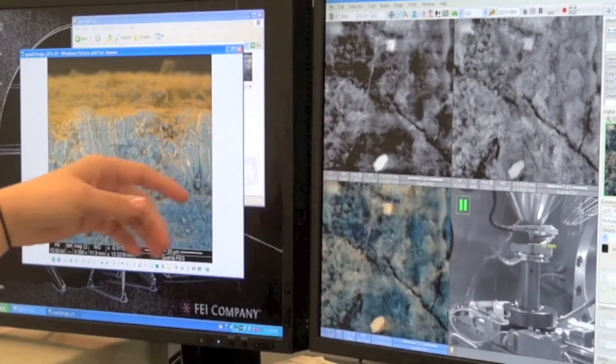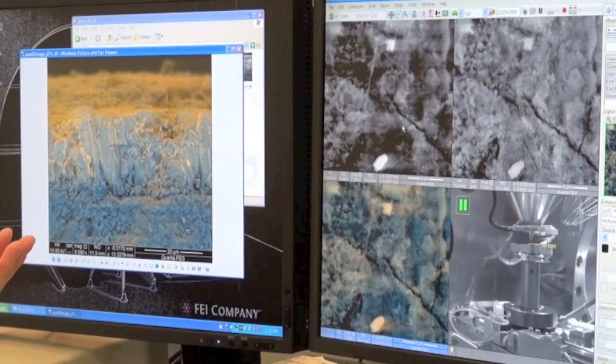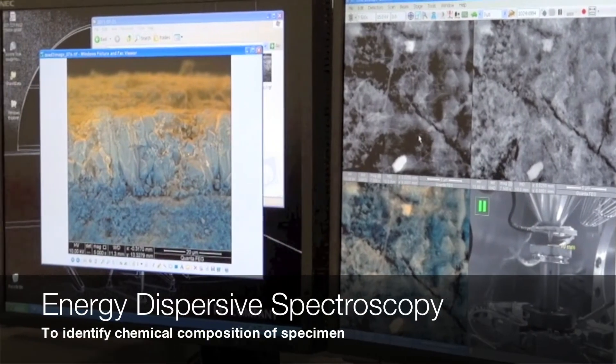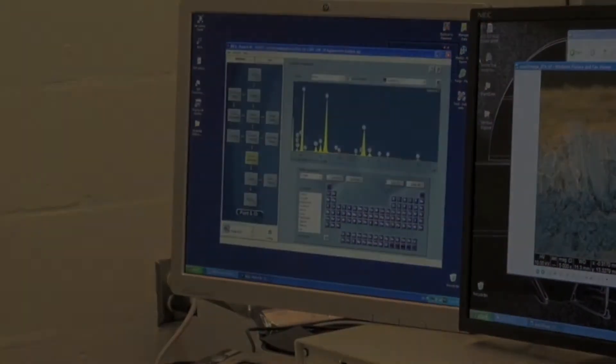We also have the ability to save any of these images into a TIFF or JPEG file. In addition to this, if we wanted to know the chemical composition of what we're looking at, we can use the energy dispersant spectrometer and figure out what chemical compounds we have in our viewing window.